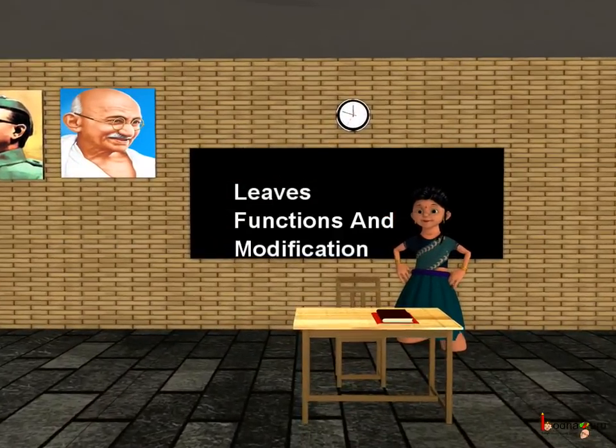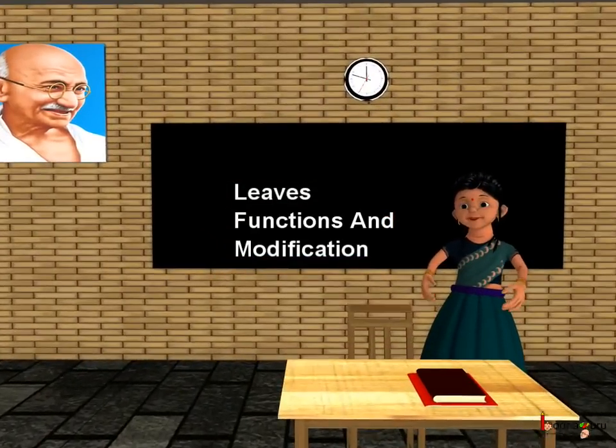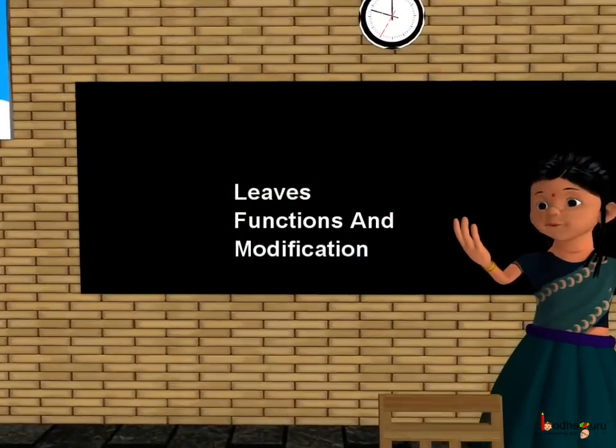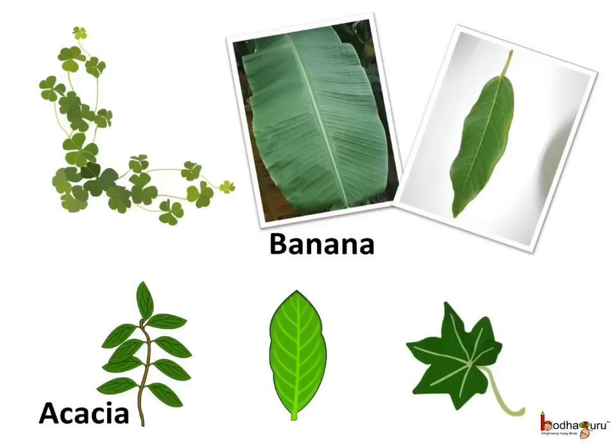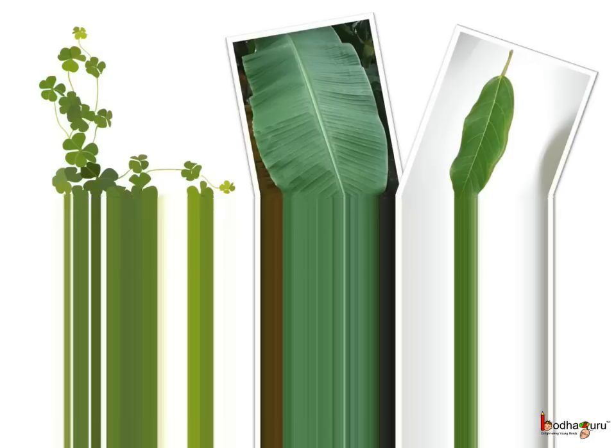Good morning children. Today we shall learn about the leaves, its functions and the modifications. If you look around you would find many kinds of leaves. Some leaves are small, for example the acacia leaves, and some leaves are big, for example the banana leaf.